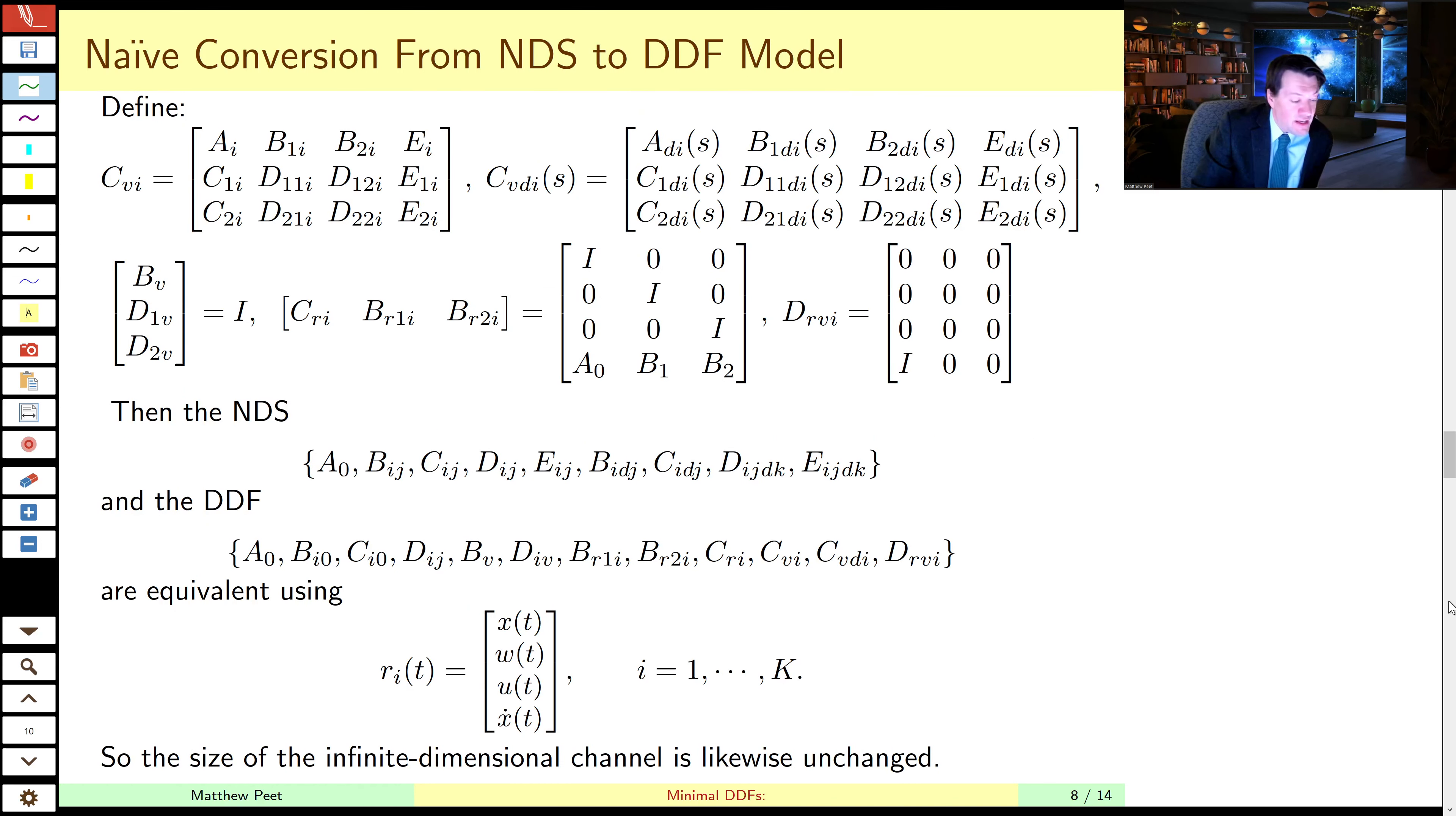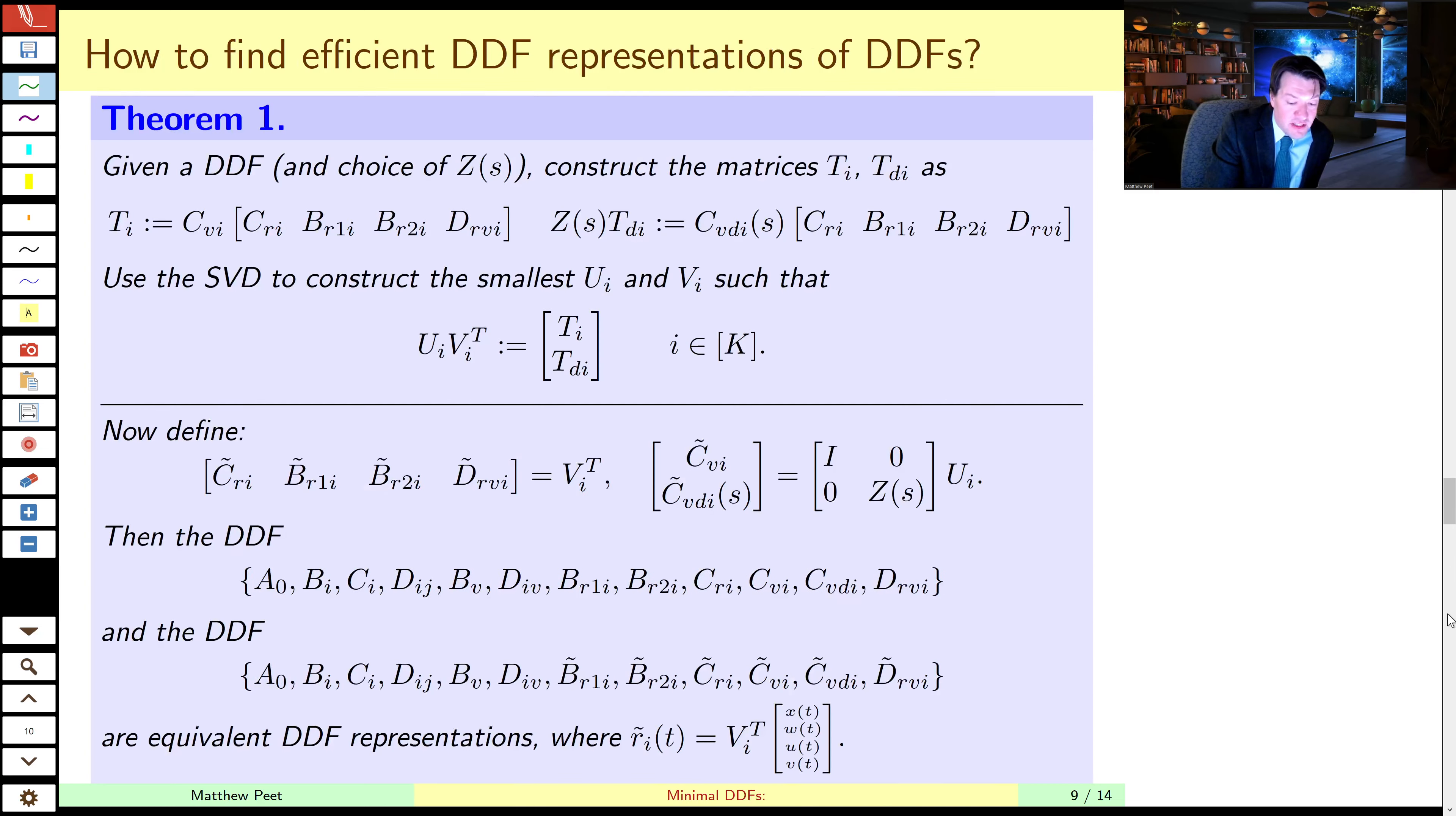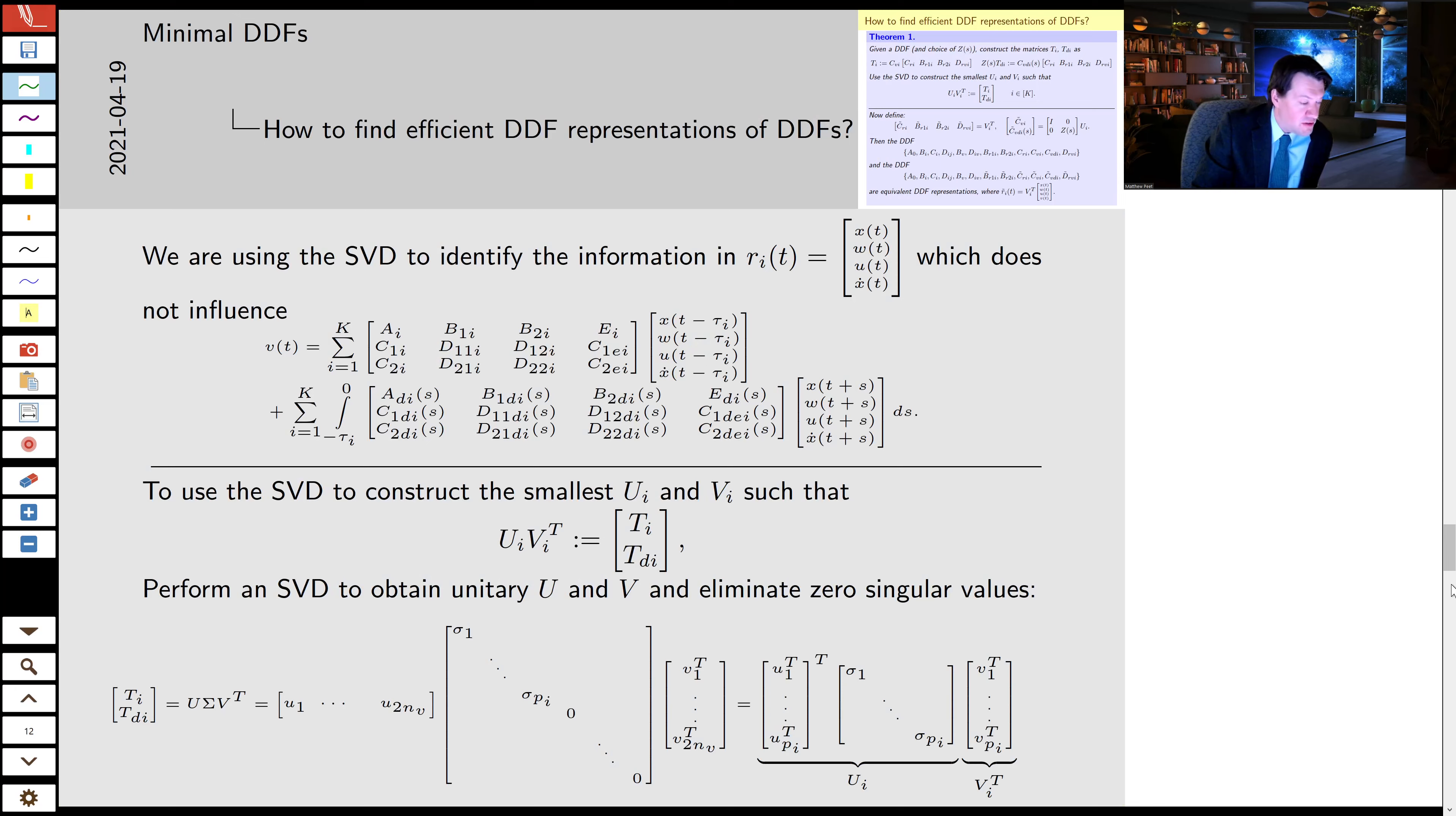Likewise, from the NDS to the DDF, we do the same thing. It's just now we output even more information, including the derivative of the state. So then the question is how to, given a DDF, which has been converted from a naive conversion formula, how to identify low dimensional information in the delay.